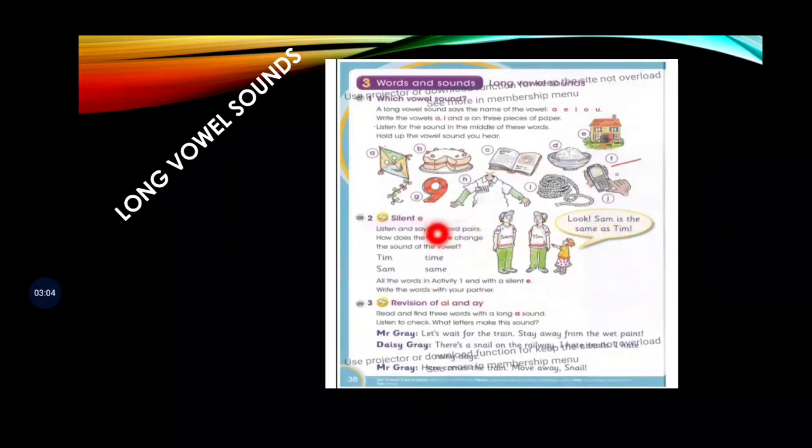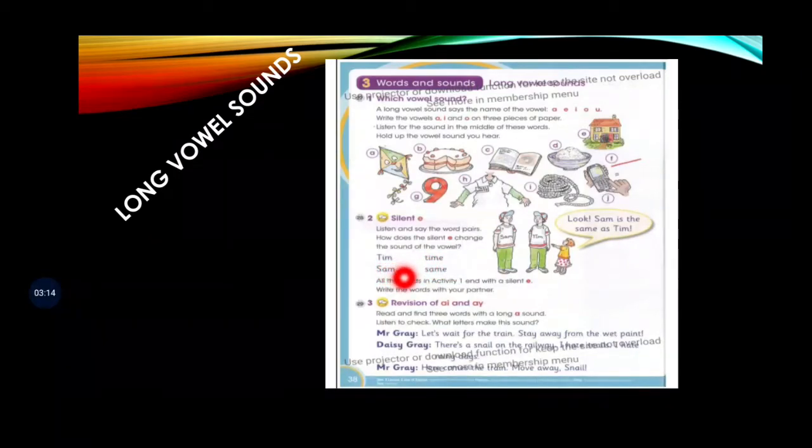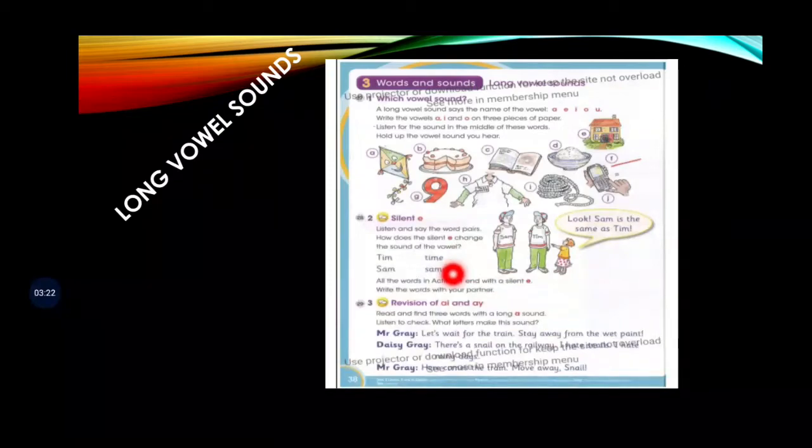Now there's a difference over here when we have a silent 'E' at the end. Listen and say the word pairs. How does the silent 'E' change the sound of the vowel? Tim - if we add 'E' then it becomes time. Over here it's a short vowel sound between two consonants, but with the addition of 'E' it becomes a long vowel sound: time.